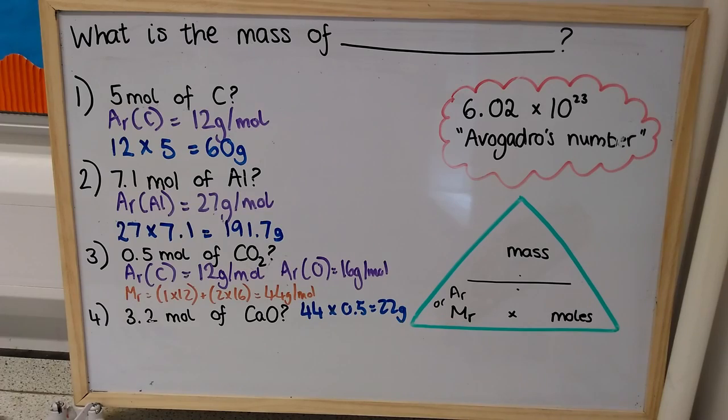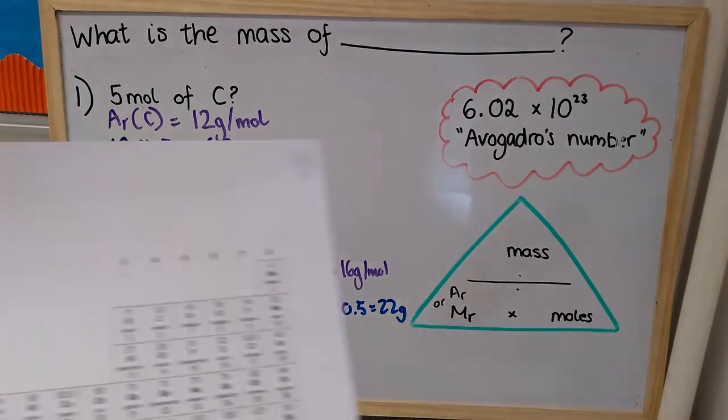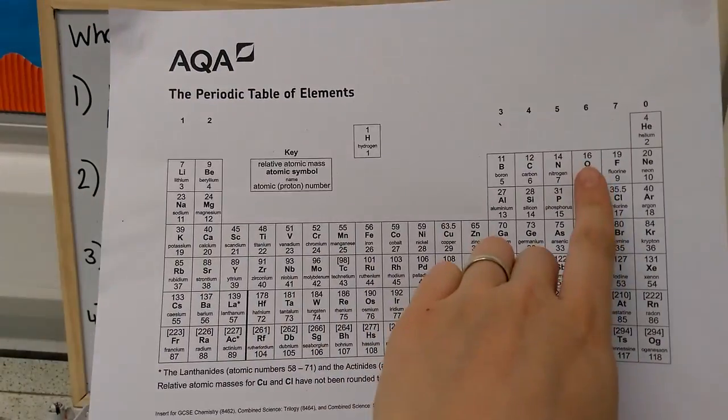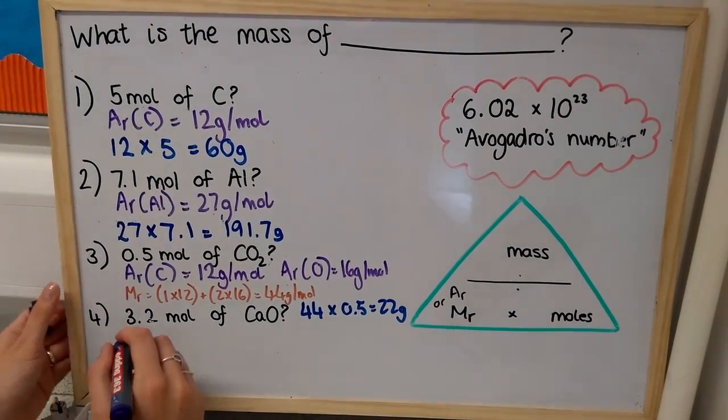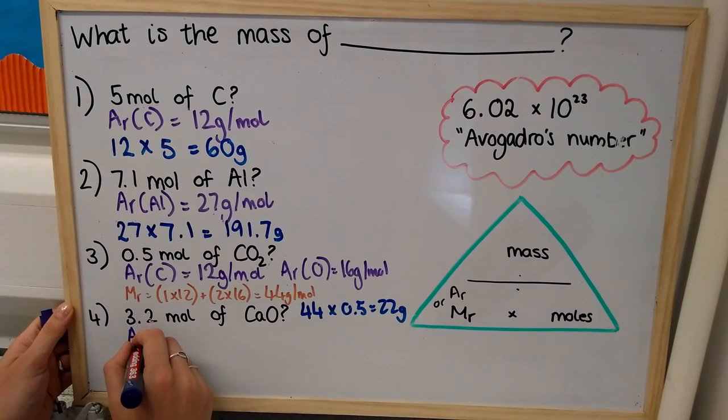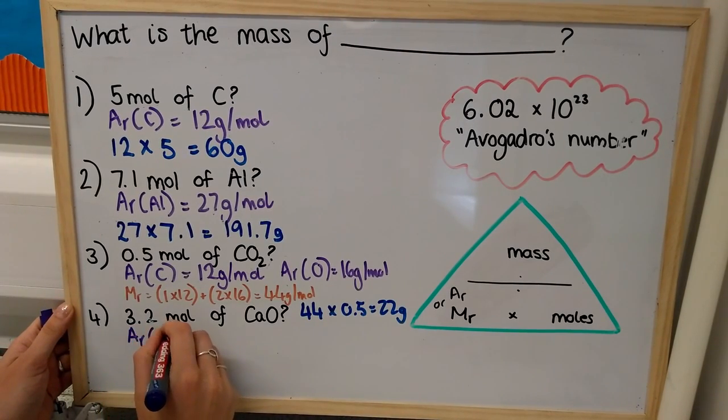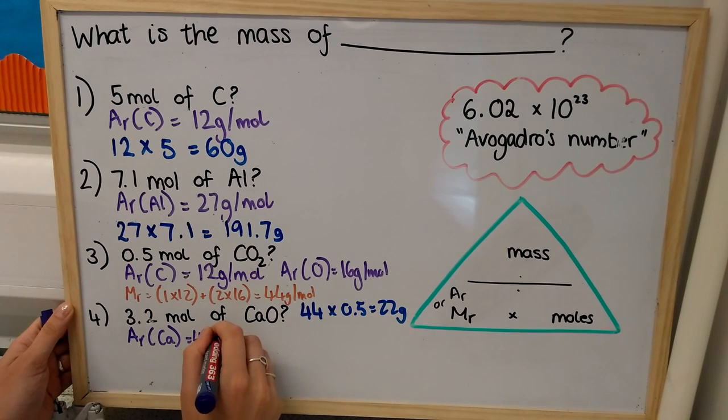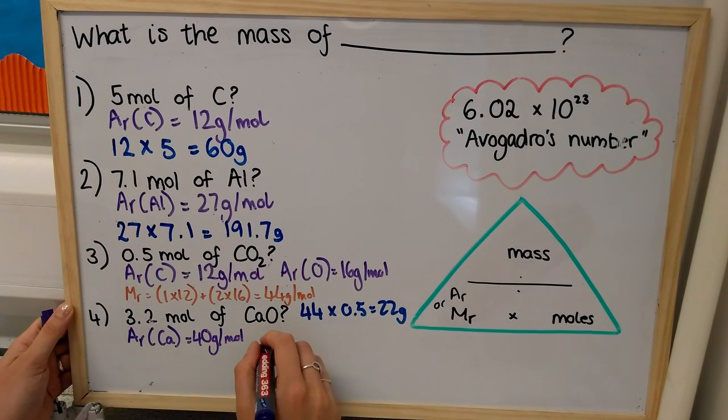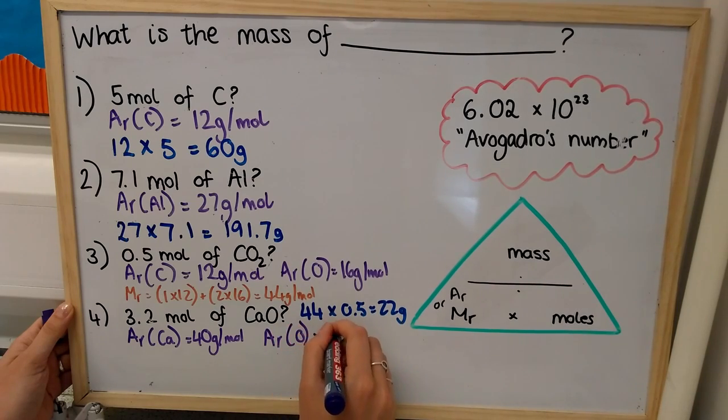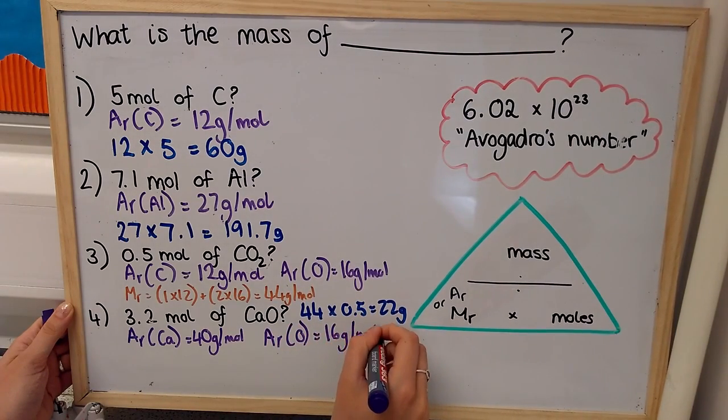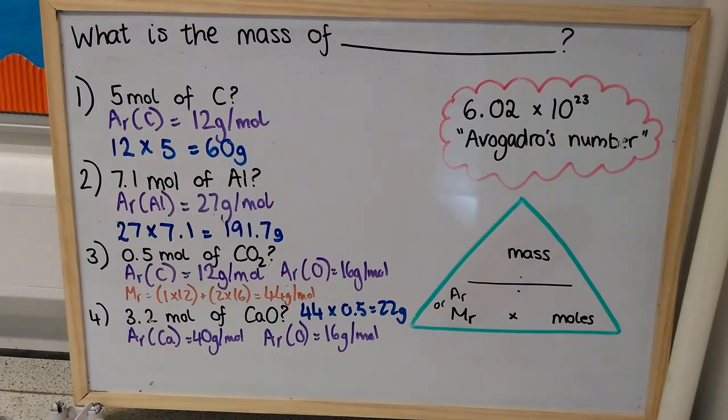For question four, I'm going to do exactly the same thing. So, start by looking up calcium and oxygen. Use those two numbers and the formula to work out what the relative formula mass will be.